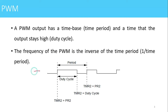A PWM waveform looks something like this. Here, this is the time period of the PWM waveform, and in this time period, the on-time tells us the duty cycle. The duty cycle is actually the on-time divided by the total time period, and it can be between 0 to 100%. The frequency of the PWM signal is decided by the value stored in the PR2 register, and the duty cycle is decided by the value stored in the CCPR1L register, which is the duty cycle register.